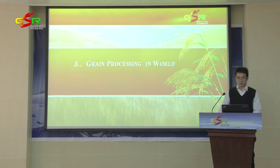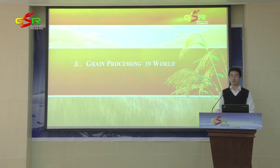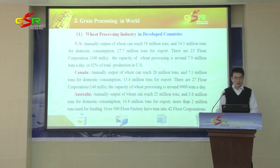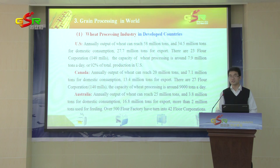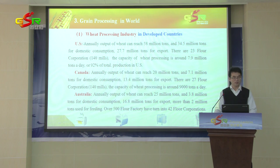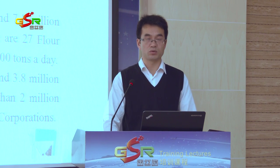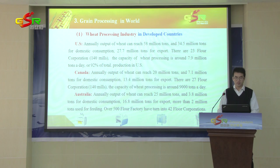From the above content, we have briefly introduced some information about green consumption and trade in the world. Next, we will talk about green processing in the world. First, we will talk about the green processing industry in developed countries, beginning with the US green processing industry. There are 23 flour corporations including 140 mills in the United States.